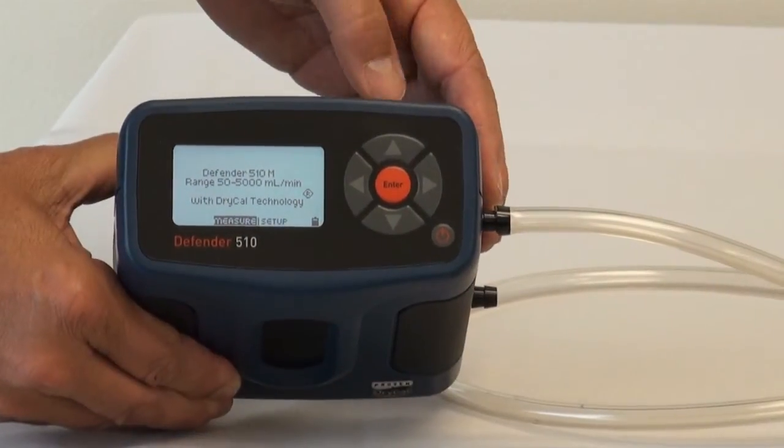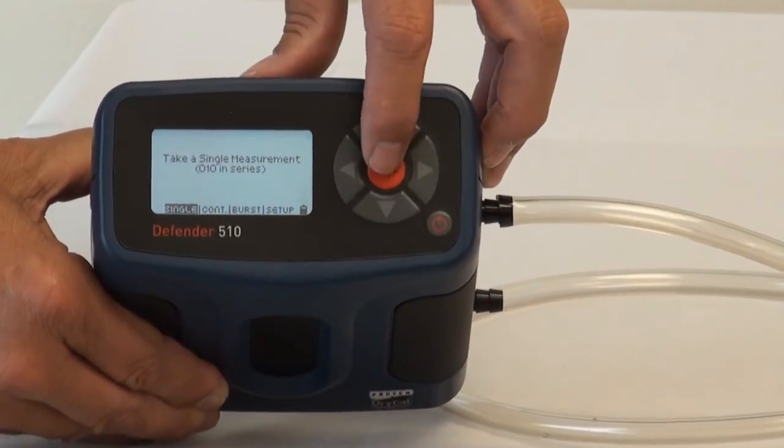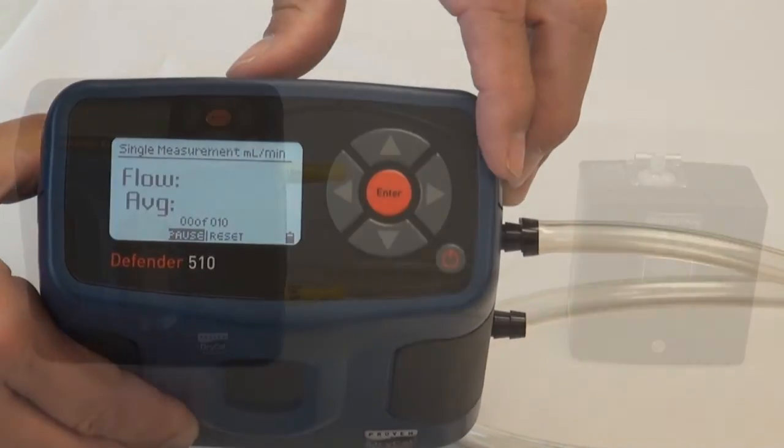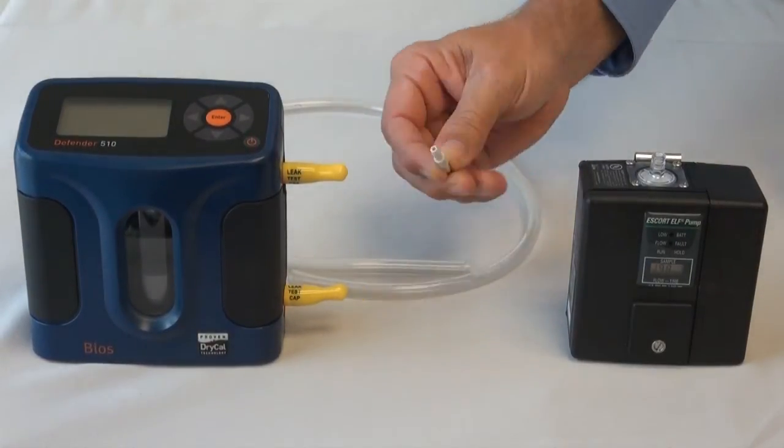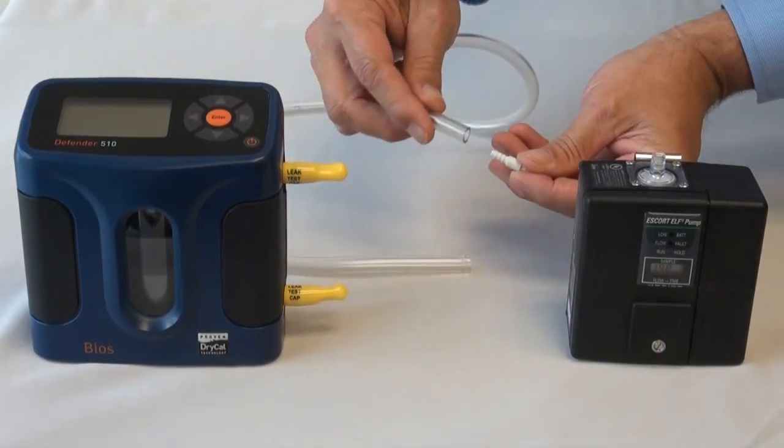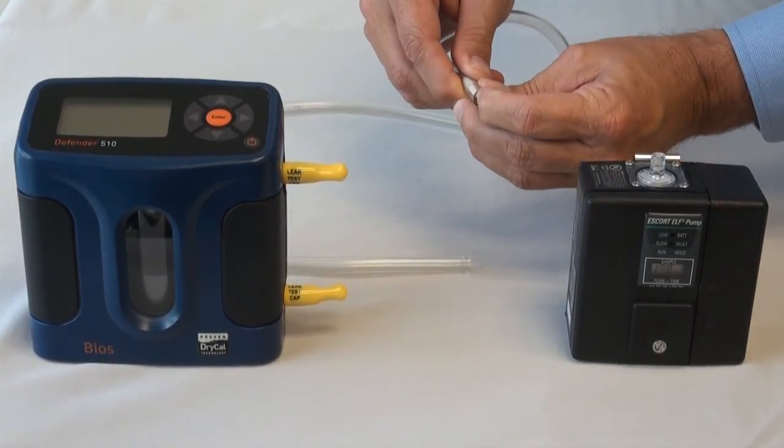If you are using a BIOS Dry Cow or BIOS Defender as your primary calibrator, it is necessary to use the isolating flow restrictor. This restrictor is provided with each new Escort Elf pump or can be purchased separately.